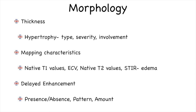Morphology includes myocardial thickness. If there is hypertrophy, we describe how severe it is, how much the thickness is, and whether there is involvement of just one segment or circumferential hypertrophy as part of a systemic process. Mapping values are commented upon in our reports, whether normal or abnormal. We also comment on edema, whether focal or diffuse areas of myocardial edema are present. Delayed enhancement is commented on based on whether it is present or absent, whether it follows an ischemic or non-ischemic pattern, and what the percentage of fibrosis is when available.